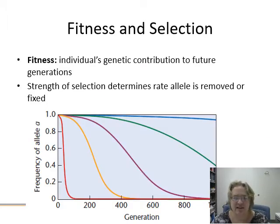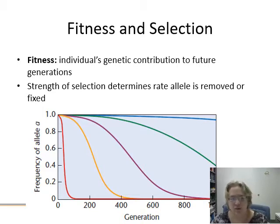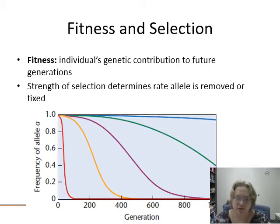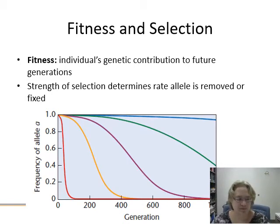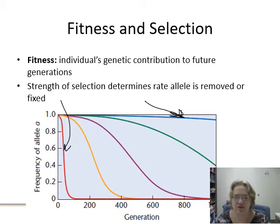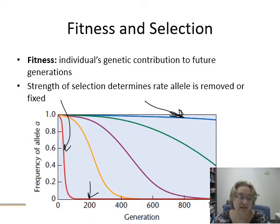Fitness is an individual's genetic contribution to future generations — did you survive, did you have many offspring, and were your offspring able to have many offspring? The strength of selection — how high or low your fitness is — determines whether you're being selected against, and determines how quickly an allele is removed from or fixed into the population. Very strong selection removes an allele quickly; very minor negative selection may take a very long time, and a change in environment could make that allele useful again.